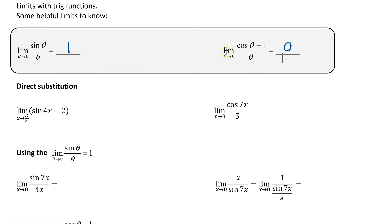If you notice, we're approaching 0 on each one, and each one has a denominator of theta, so that would be 0 and 0. So at theta equals 0, both of these are undefined. But as the limit as we approach them, this one will be 1, and this one will be 0.